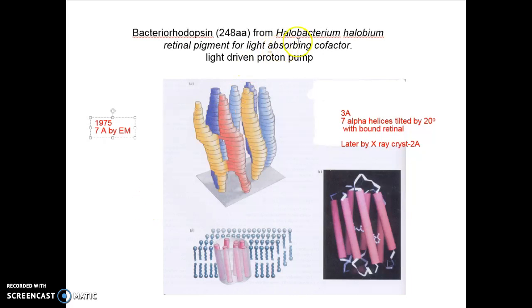Bacterial rhodopsin from Halobacterium halobium can convert light into the proton gradient across the bacterial cell membrane. It has the retinal pigment which functions as light absorption. In 1975 the first glimpse of how it looks was obtained by EM technique. The initial resolution was 7 angstrom, later improved to much better resolution clearly showing 7 alpha helices tilted by 20 degrees across the membrane.